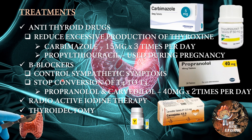Examples of beta blockers are propranolol and carvedilol 40 mg two times per day. We can also do radioactive iodine therapy, and the surgical treatment is thyroidectomy. In these pictures you can see some drugs: carbimazole tablets, propylthiouracil tablets, propranolol tablets, carvedilol tablets, and radioactive iodine.